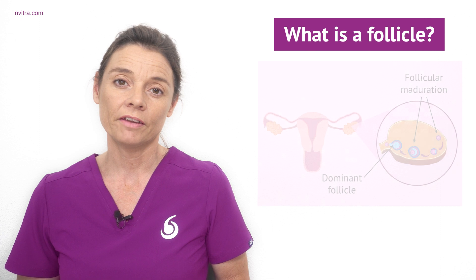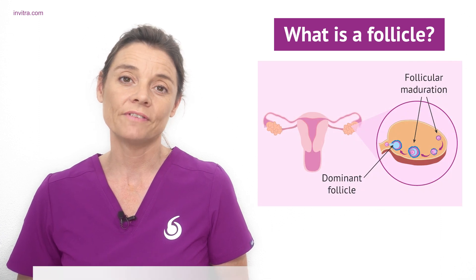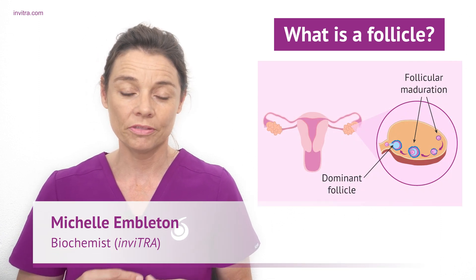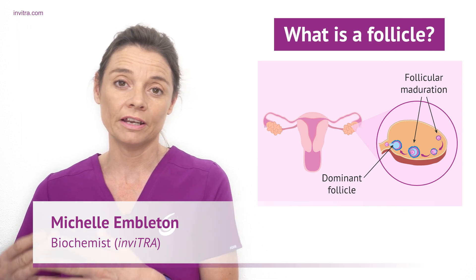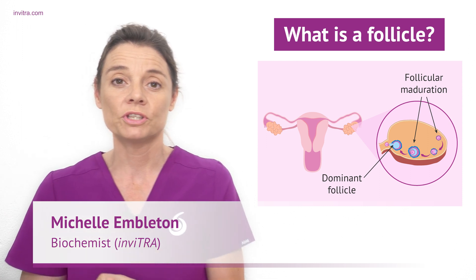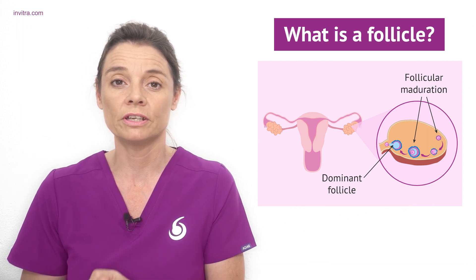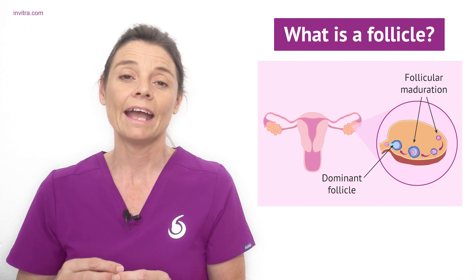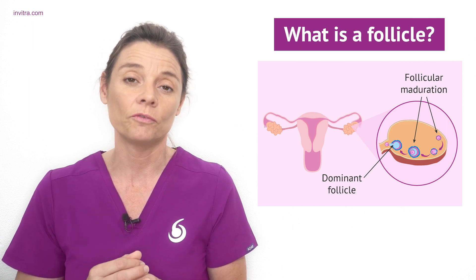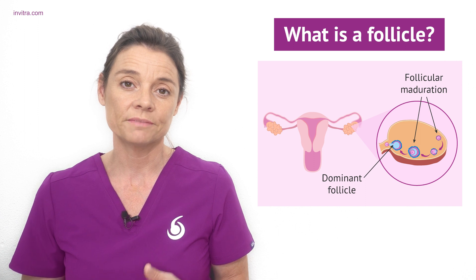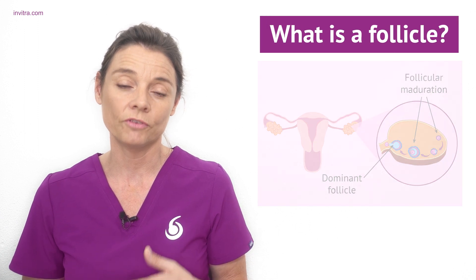Follicles are the ovarian structures where the eggs develop and mature. Each month a set of follicles begin to develop and undergo a process which ends with just one follicle reaching full maturation and releasing an egg in ovulation. The follicle that reaches this maturity is known as the dominant follicle.